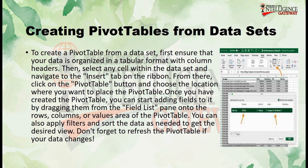Once you have created the pivot table, you can start adding fields to it by dragging them from the field list pane onto the rows, columns, or values area of the pivot table. You can also apply filters and sort the data as needed to get the desired view. Don't forget to refresh the pivot table if your data changes.